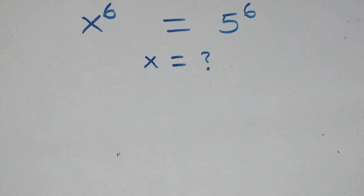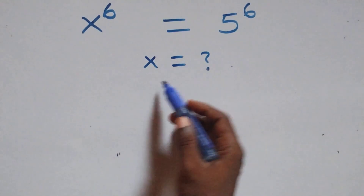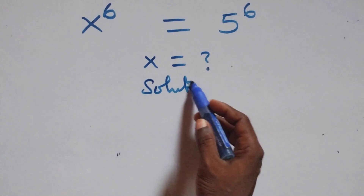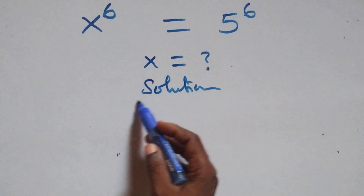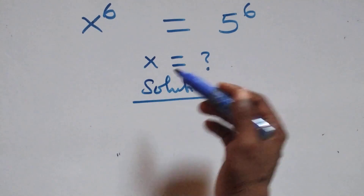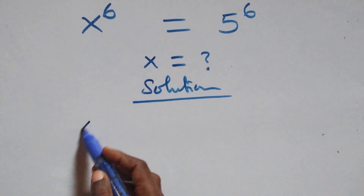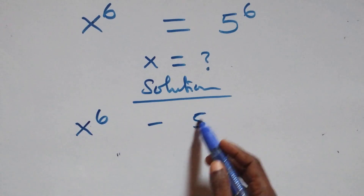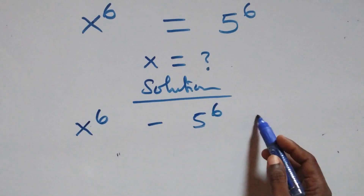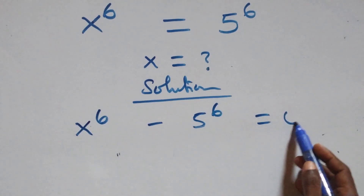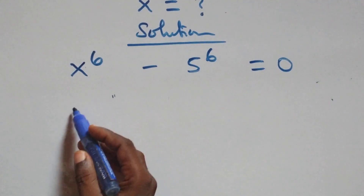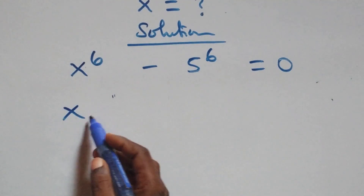Hello, you are welcome. We are going to solve this nice exponential equation. We take 5 raised to power 6 to the left hand side and we have x raised to power 6 minus 5 raised to power 6 equals to 0.